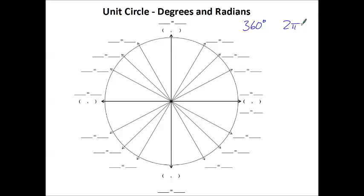Since this unit circle is in standard position, it is centered at the origin, and that's where our x-axis and our y-axis cross each other. We have four important points. If we go just to the right one radius, that is (1, 0). If we go only up, that would be (0, 1). Going to the left is (−1, 0), and going down would be (0, −1). Those will be the only integer coordinates of our unit circle.